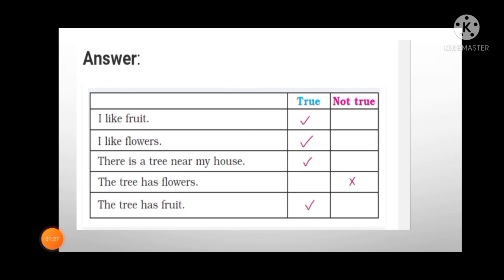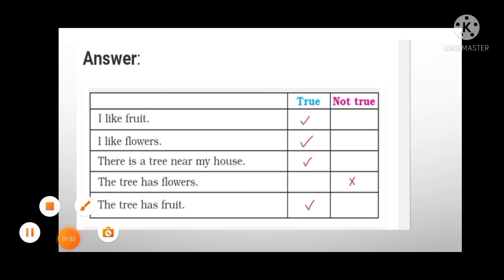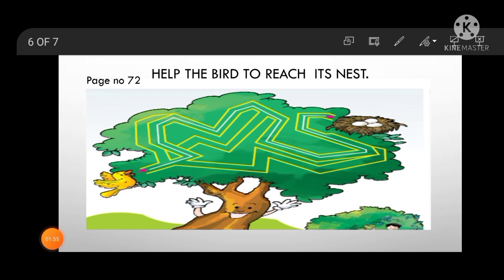Exercise number three: put right or wrong. If it is true put a tick, if it is wrong put a cross. 'I like fruit' — right. 'I like flowers' — right. 'There is a tree near my house' — right. 'The tree has flowers' — wrong. 'The tree has fruits' — right. Do the same in your Marigold textbook.